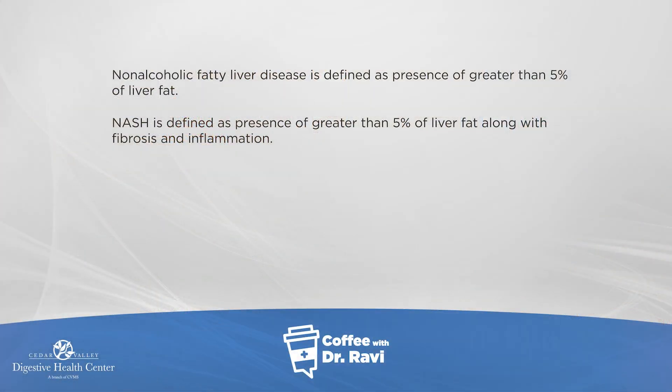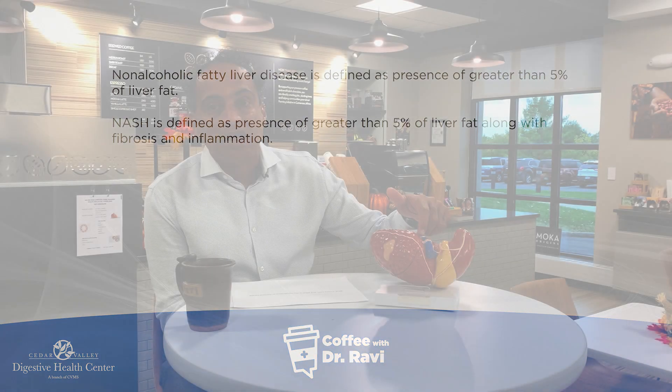Fatty liver is defined as having greater than five percent of the liver being fatty tissue. If there's inflammation set off in the liver by the body's own system because of the fat, it's called NASH. So there's a little difference between fatty liver and NASH — NASH is where there's inflammation, and that's reflected in the blood by some abnormal tests.